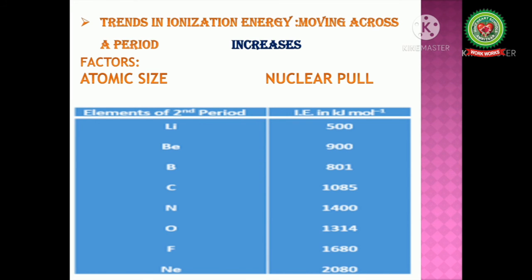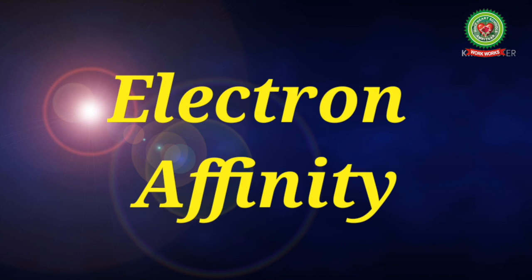Here is an example of the second period. As we move across a period from lithium to beryllium, boron, carbon, nitrogen, oxygen, fluorine, and neon, ionization energy increases in kilojoule per mole. In the next video we will further discuss about the next property of the periodic table, which is electron affinity or electron gain enthalpy. Thank you.